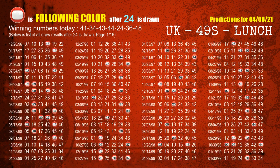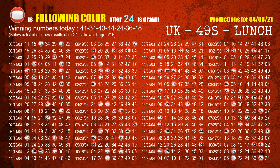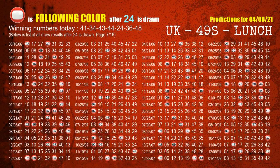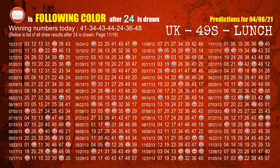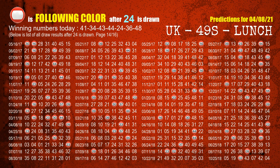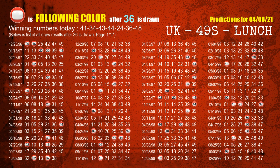The fifth winning number is 24; the most frequently following color is red when 24 is the winning number in the last draw. The sixth winning number is 36; the most frequently following color is red when 36 is the winning number in the last draw.